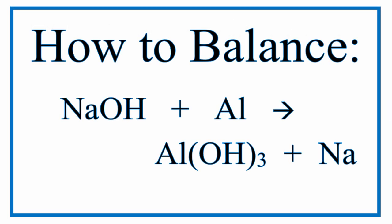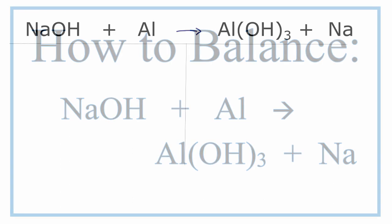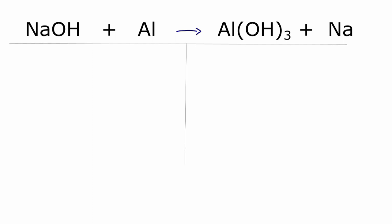Here we have the reaction sodium hydroxide plus aluminum gives us aluminum hydroxide and then solid sodium metal. Let's start out by adding up the atoms on each side of the equation.